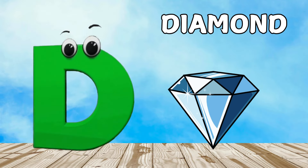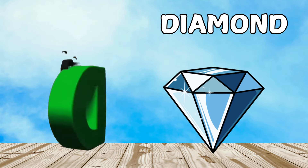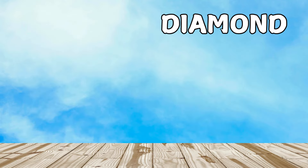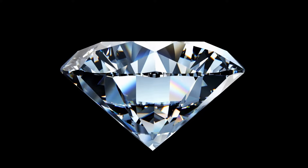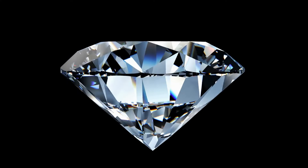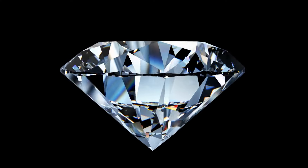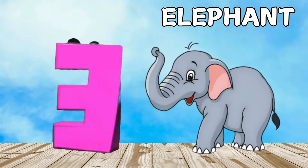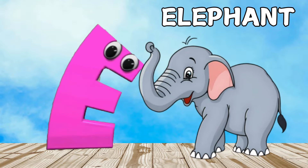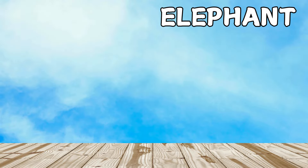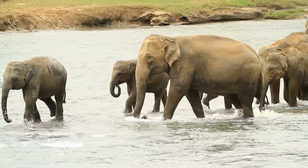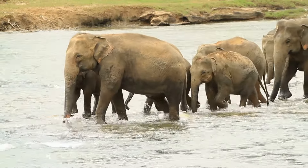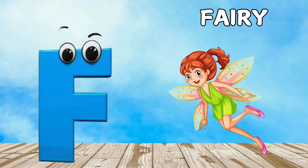C is for Candy. K, K, Candy. K, K, Candy. C, Candy. D is for Diamond. D, D, Diamond. D, Diamond. E is for Elephant. A, A, Elephant. E, Elephant.